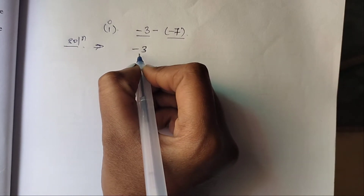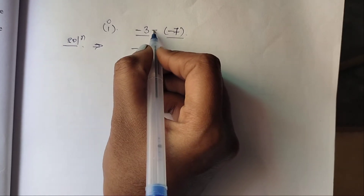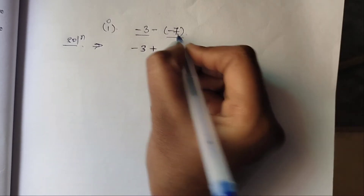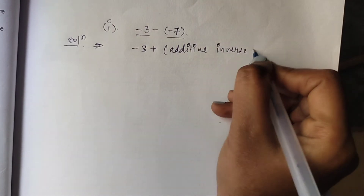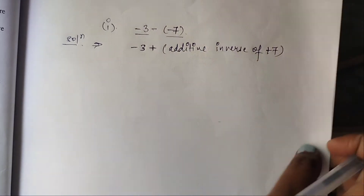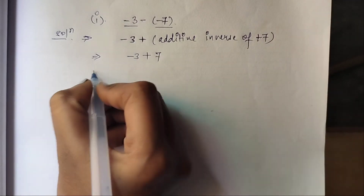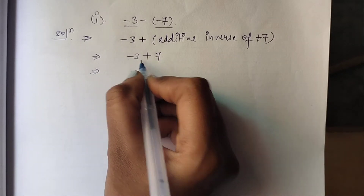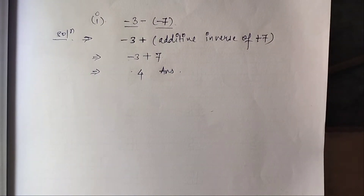We will write as it is: minus 3. And additive inverse of minus 7 — the additive inverse of minus converts to plus. So minus 3 plus plus 7: minus plus gives minus, so 7 minus 3 gives 4. So 4 is your answer.